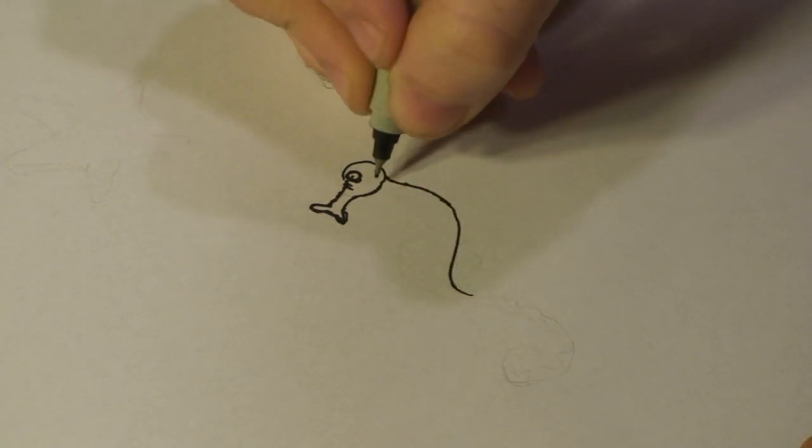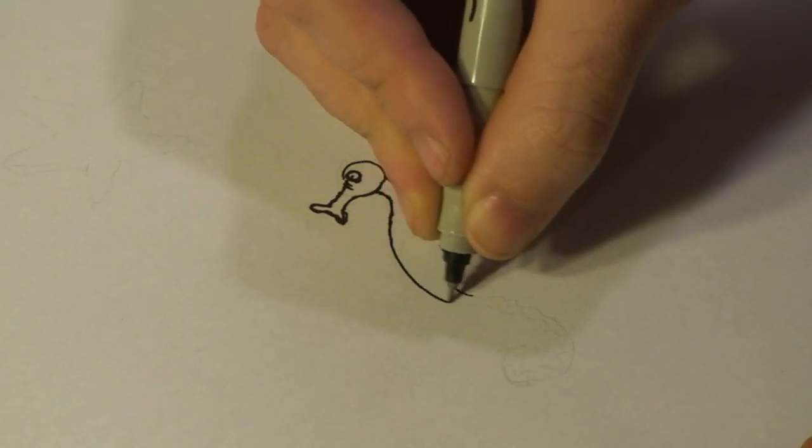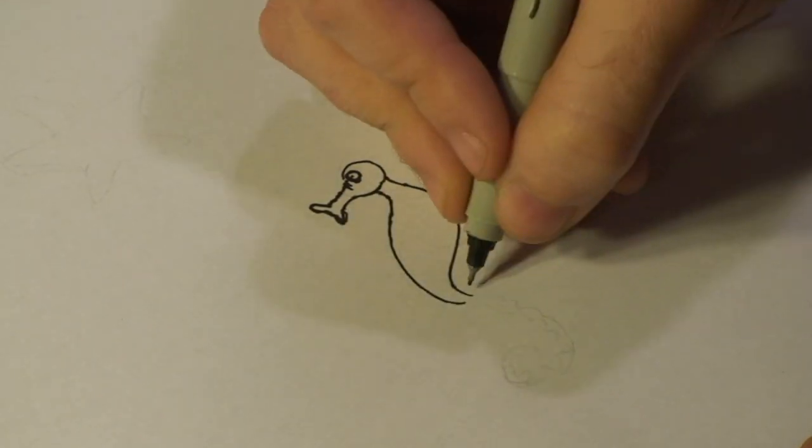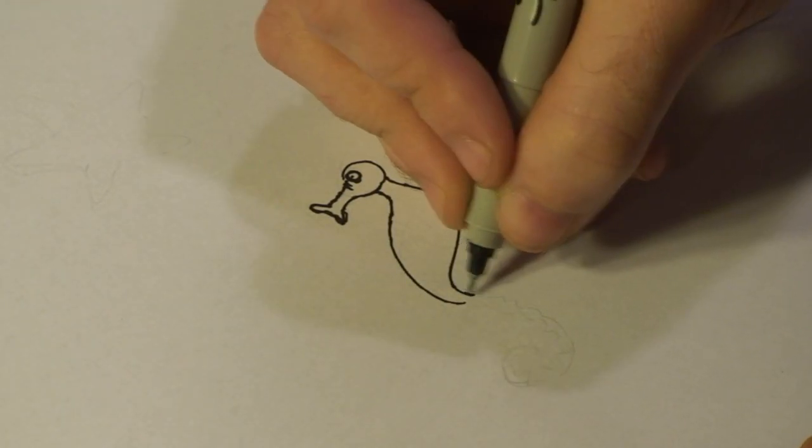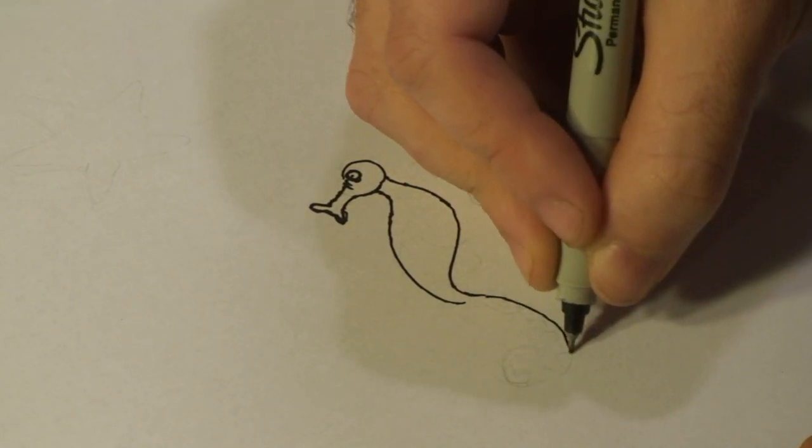And you're going to start drawing out his body. Like so. And then whenever you're drawing out his tail, you don't want it to spin out this way, you want it to come down like this.